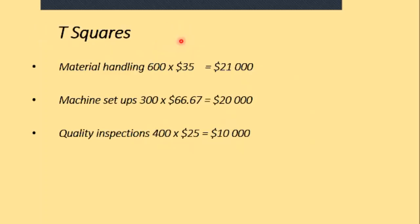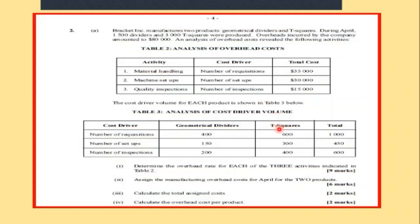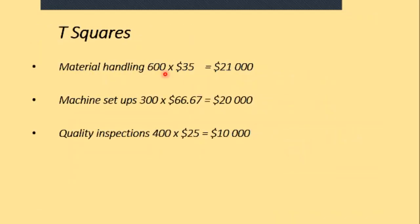Then we go to T-squares and do the same thing: material handling, machine setups, and quality inspection. We multiply the amounts given in the data for T-squares — requisitions, setups, and inspections: 600, 300, and 400 respectively — by the activity rates we calculated. And we get the overhead amounts assigned to T-squares.